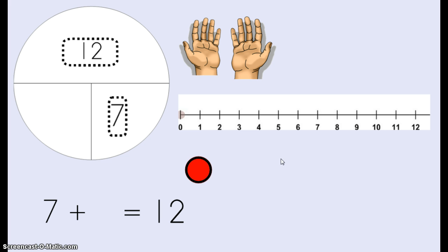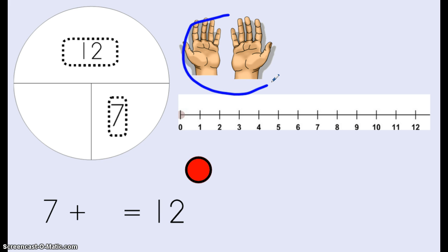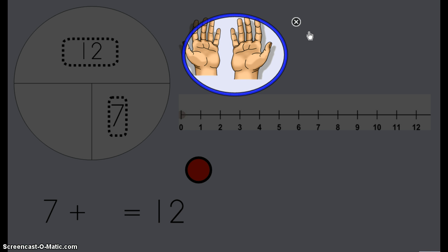The last time we did this with a part part whole mat we used a few different ways to figure out our answer. One of the ways we used was our fingers. We started at 7 and counted on until we got to 12.